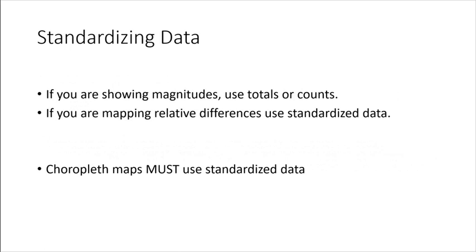So if you're showing magnitudes, you definitely want to use a total or a count. But if you're mapping relative differences between places, stick with standardized or normalized data. And like I said, choropleth maps must use standardized data. No raw counts, no population totals with a choropleth map.